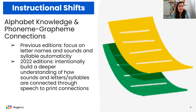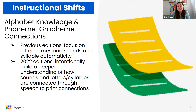Another change that you will see within the curriculum is going to be our alphabet knowledge section. In our previous editions, the large focus of this section was really on the automaticity of letter names, letter sounds, and syllable identification with those direct syllables. In our newer editions, you're going to see how we are intentionally building that deeper understanding of those sounds and letters and how they work together, as well as those syllables — not just those direct syllables, but mixed syllables, las sílabas trabadas y los diptongos as well. We really want to think about our phonological awareness lessons as a way to build oral language and utilize alphabet knowledge time as a way to make those print connections.